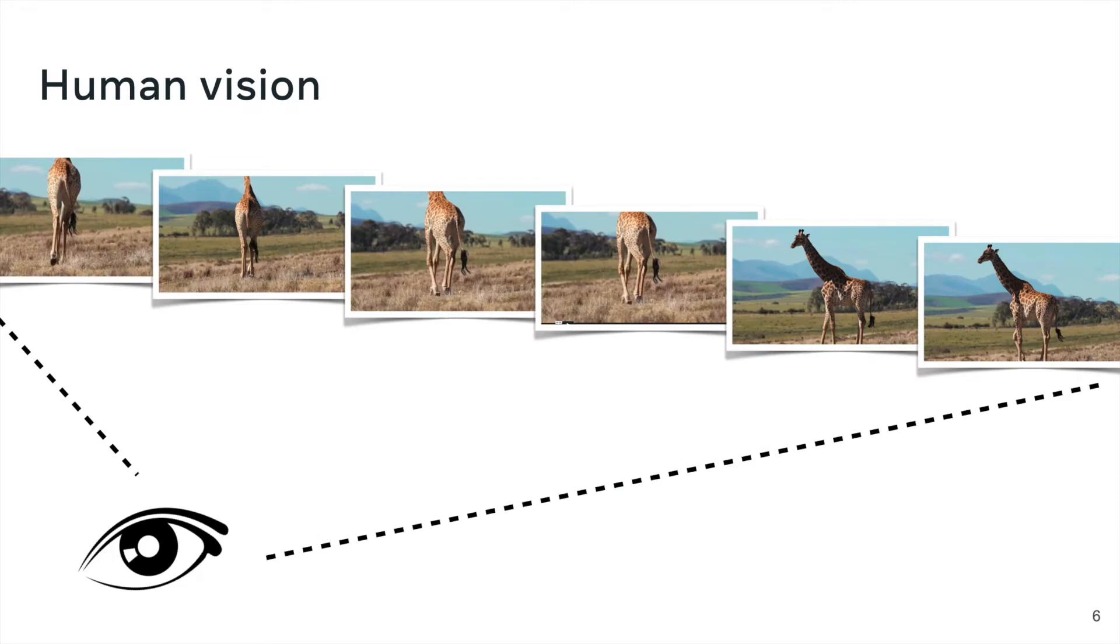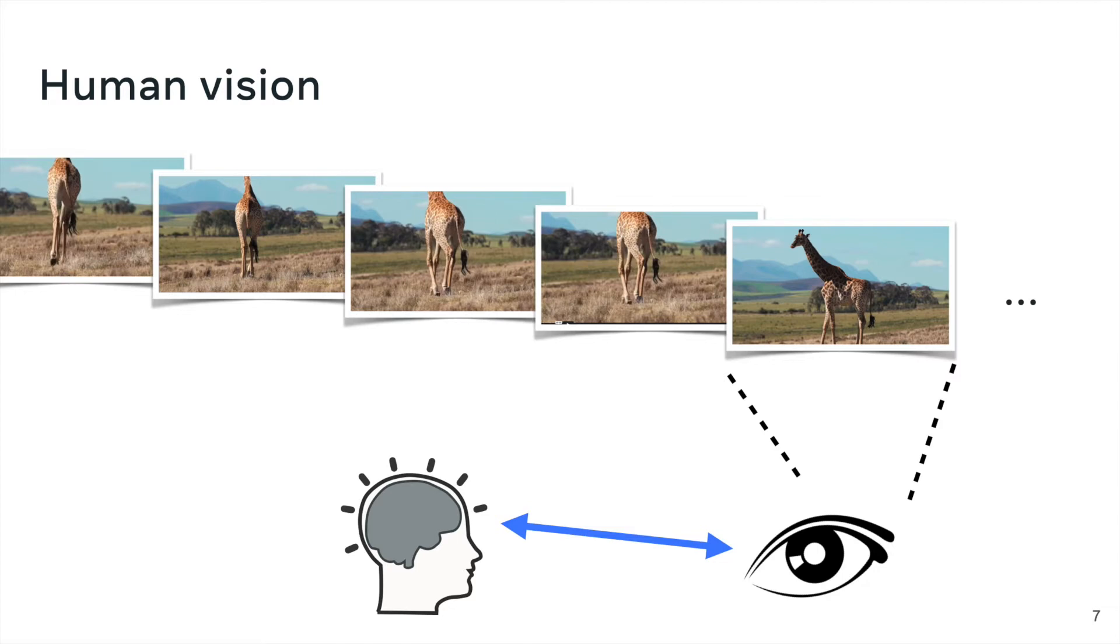In this work, we take inspiration from how humans make sense of long-term patterns. In particular, we know that humans don't capture and process all the visual information across time at once. But instead, humans see and process one frame at a time, but additionally interact with our memory to perform long-term reasoning. This strategy avoids jointly processing all the frames at once and potentially be more efficient.